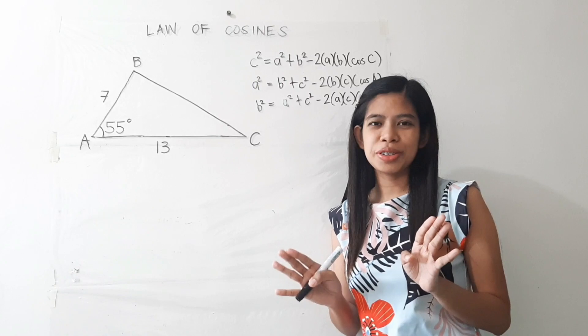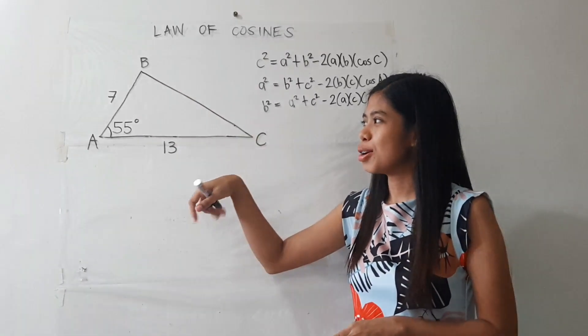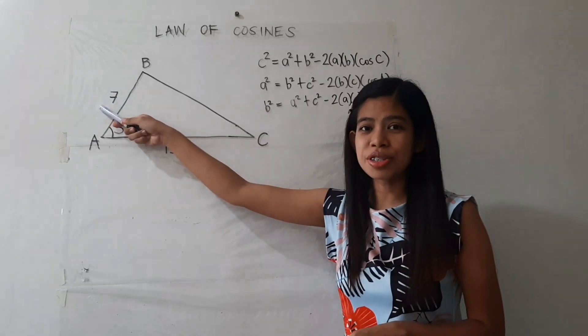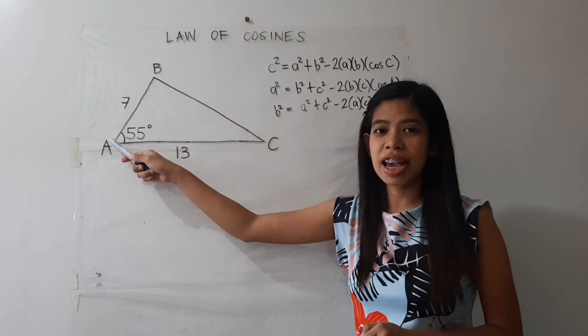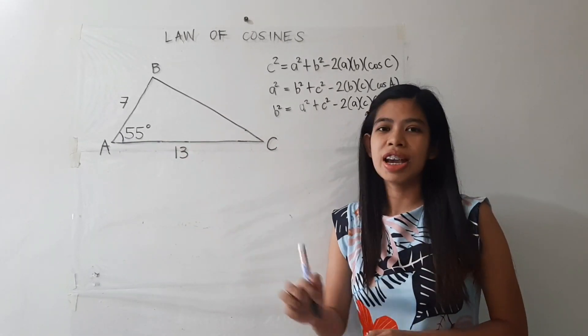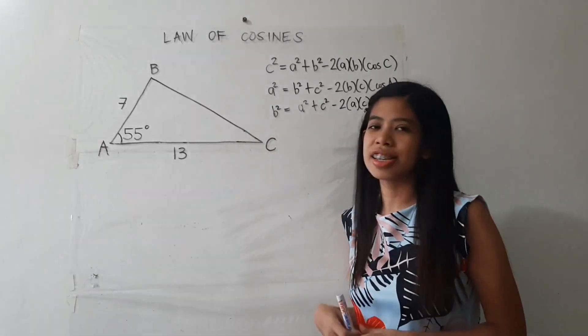Okay, so again, I'm going to give you an activity. So suppose you are given triangle ABC with side C which measures 7 and side B which measures 13. And the angle between them is angle A which measures 55 degrees. So you may use any of these formulas for you to find out the measure of side A.